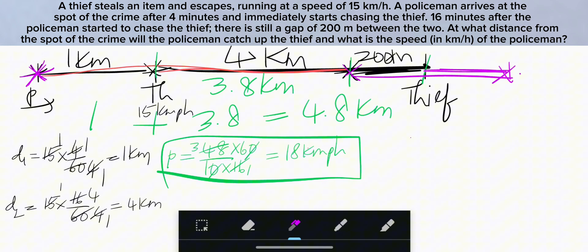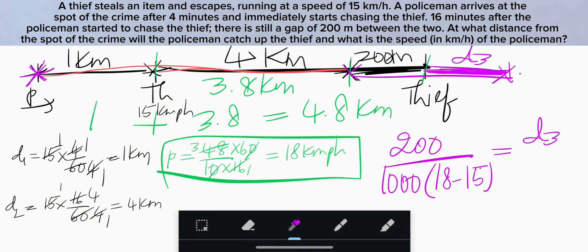Relative time is distance is 200 meters. In kilometer, we need to write 1000 in denominator. Relative speed is 18 minus 15. So this gives relative time. This time equals time taken by thief to cover this portion. So of T3 basically. Let's say this is D3.